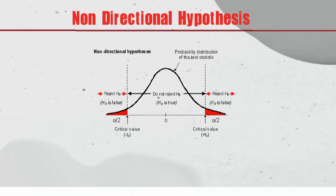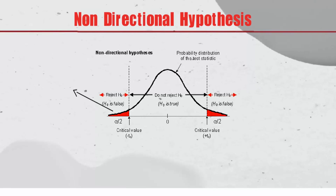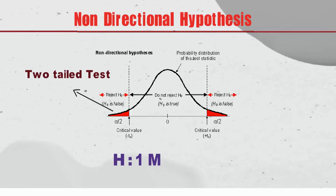In non-directional hypothesis testing, the non-directional test is also called a two-tailed hypothesis test, or two-sided test, because you can test for effects in both directions. When you perform a two-tailed test, you split the significance level percentage between both tails of the distribution, as shown in the graph.